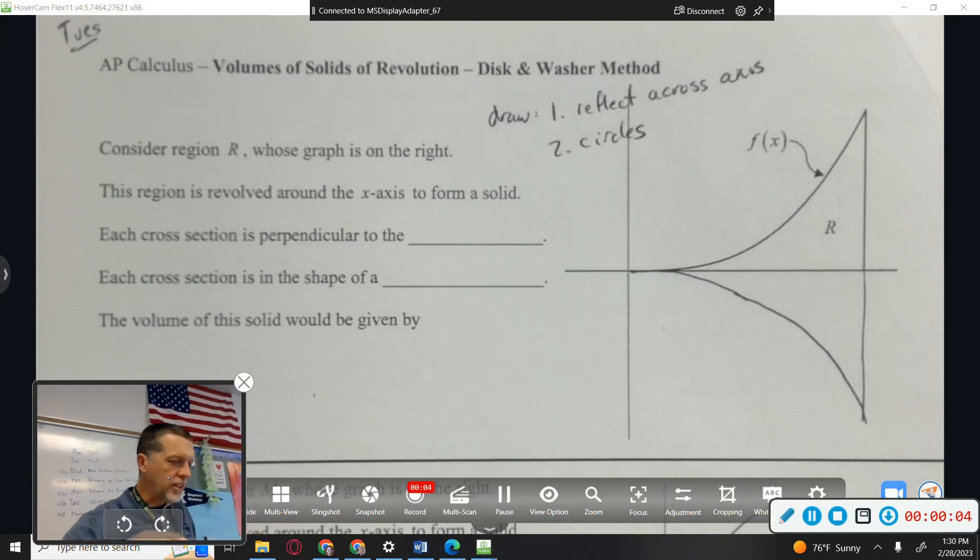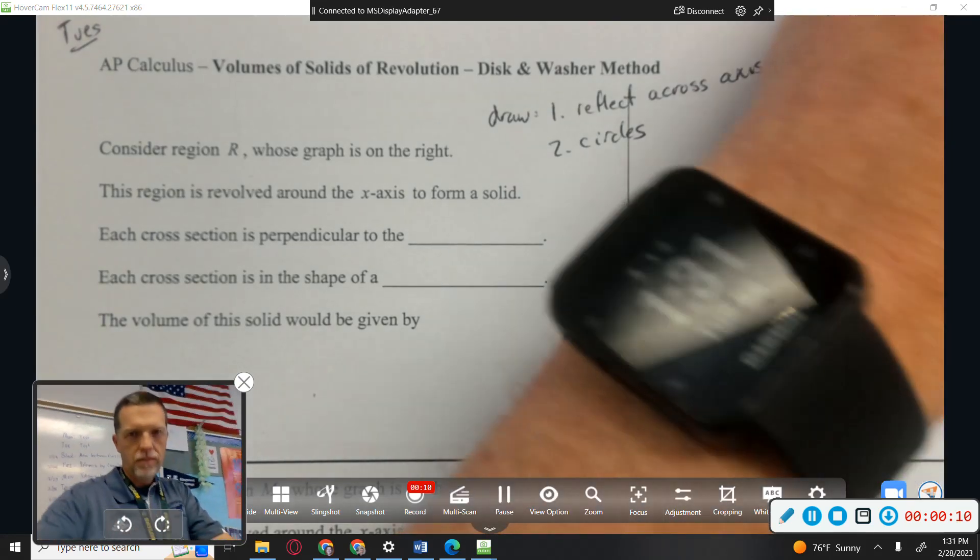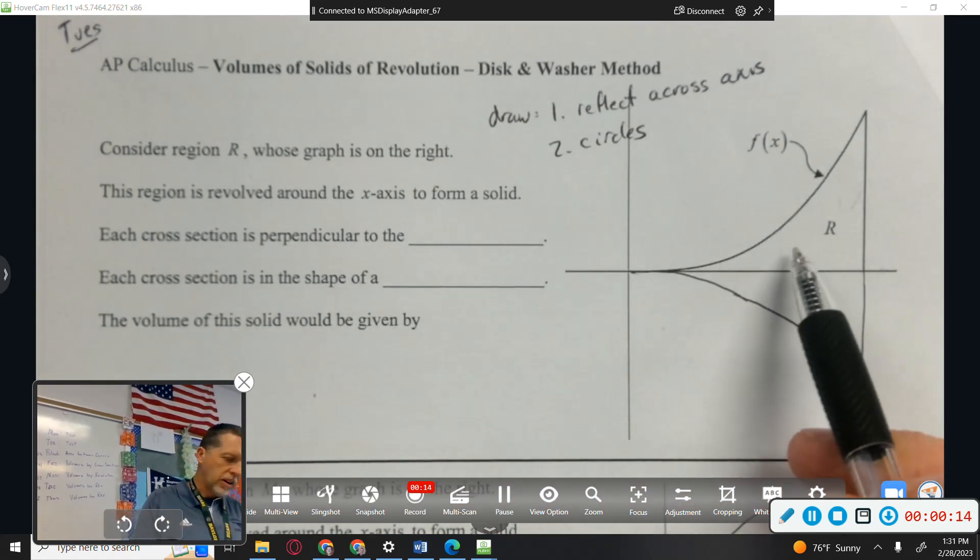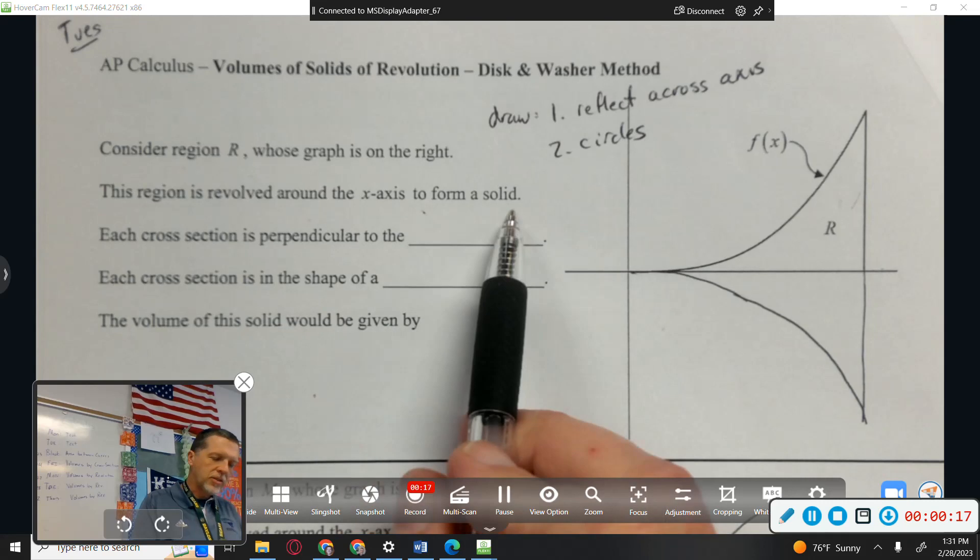All right, solids by revolution - making a solid by taking a base area and rotating it around an axis. So we'll start with region R. You're going to rotate it around the x-axis to form a solid.